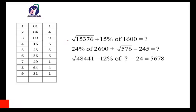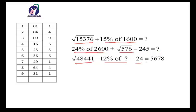Generally the questions asked in examinations are like: square root of 15376 plus 15% of 1600 equals how much, or 24% of 2600 plus square root of 576 minus 256 equals question mark, or square root of 48014441 minus 12% of 24 equals 5678. In this way different types of questions are asked where you have to find the square roots of given numbers — it may be 3 digits, 4 digits, or 5 digits.